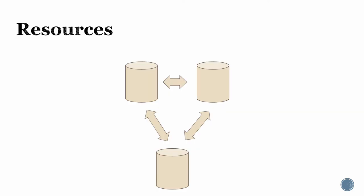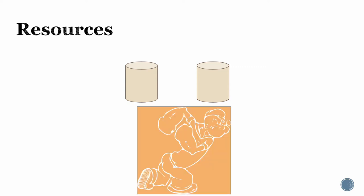In our model we'll have a number of parties participating in some execution, maybe sending messages to each other. Every so often a party is going to come up with a winning lottery ticket. For us, this lottery ticket is what we call a resource. When a party gets a resource, it's like Popeye — he eats his spinach and becomes very strong. So the party that gets a resource is going to have a special power in the protocol to send a special message.